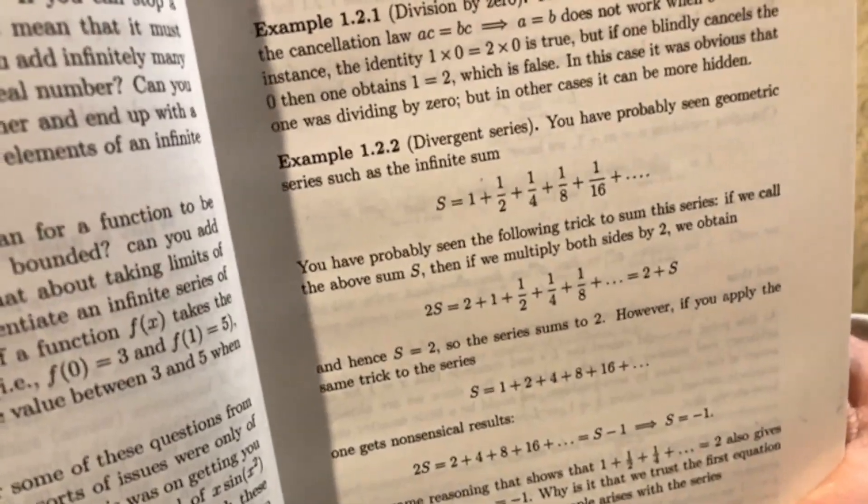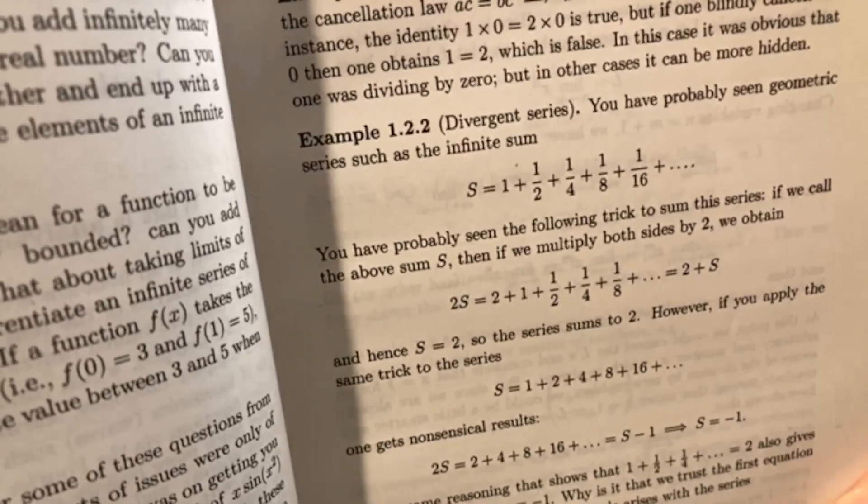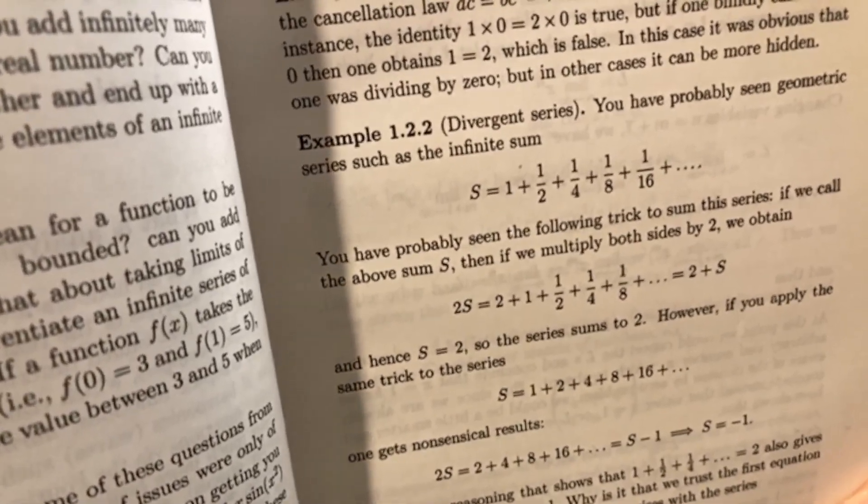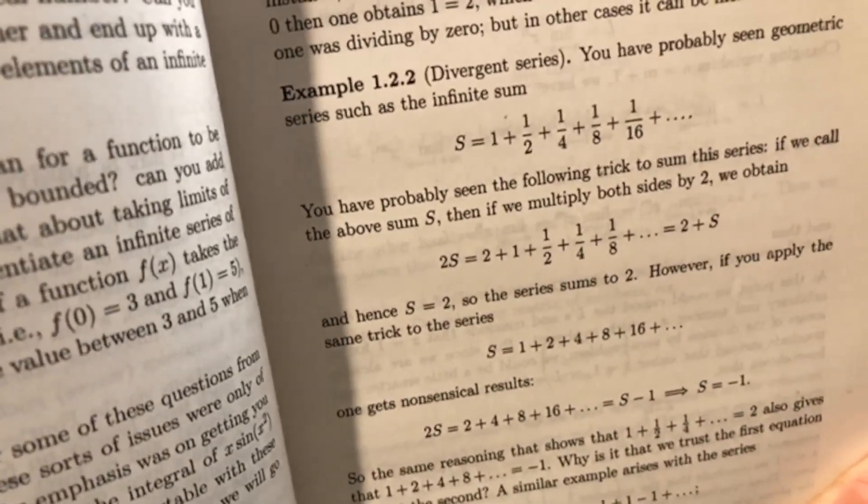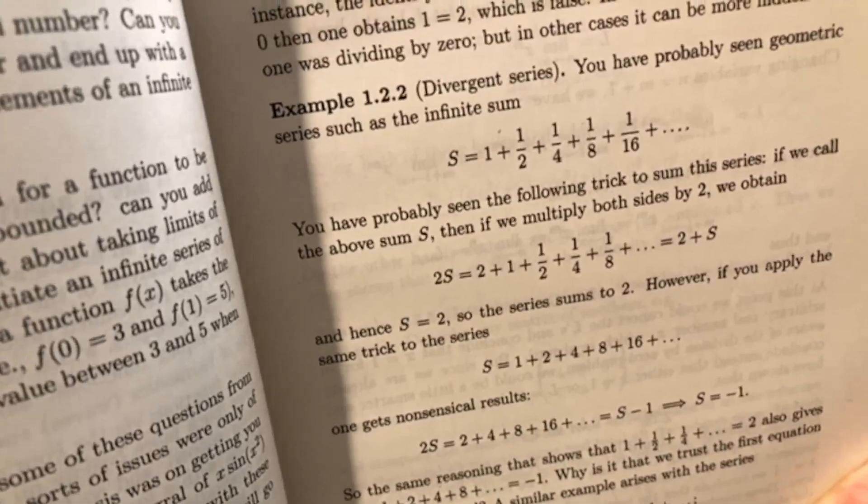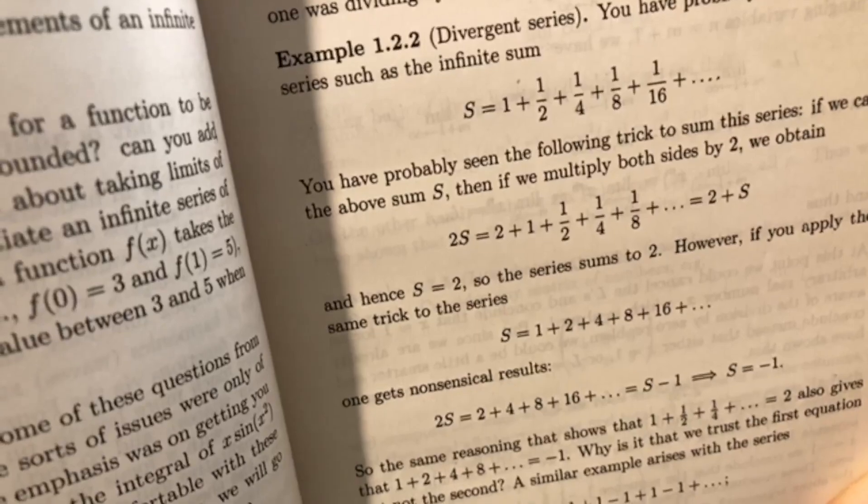Here's an example: Divergent series. You have probably seen the geometric series, such as the infinite sum. You have probably seen the following trick to sum the series. You haven't, right? He's very clever. Terrence Tao is a genius. That's a really cool solution.